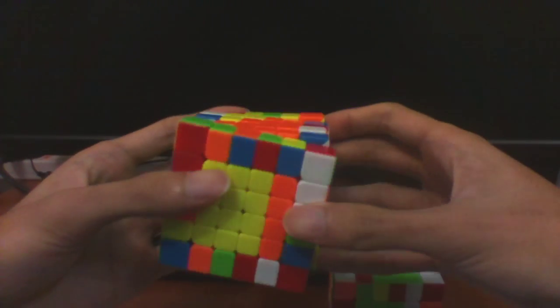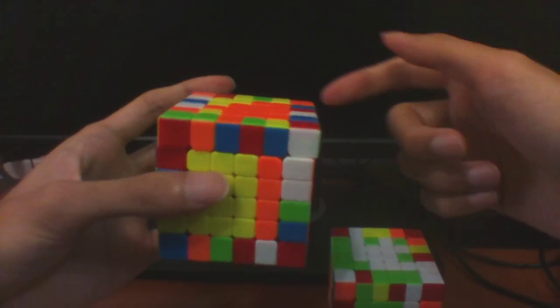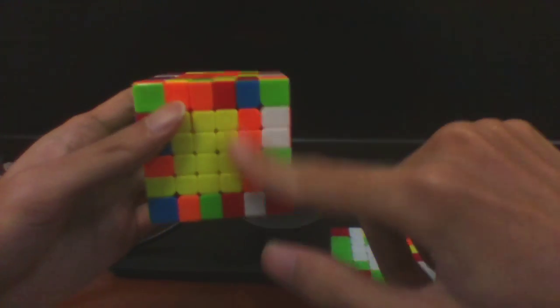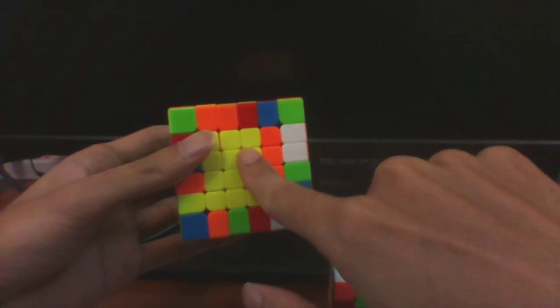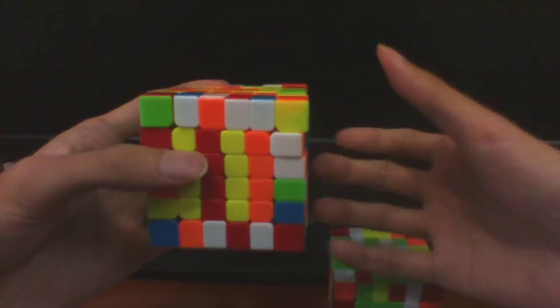For this case, it's very similar. Instead of doing RU2R' to insert this partial bar, we move the bar over its position and then instead of bringing out this 3rd slice, we bring it out with the 4th slice instead. And do the same thing.